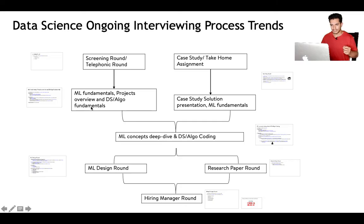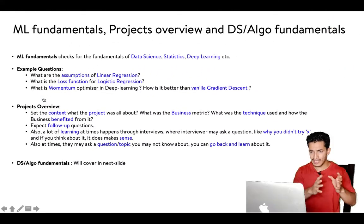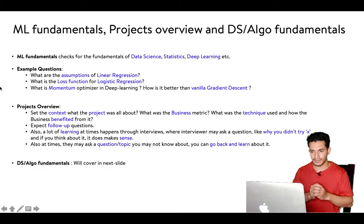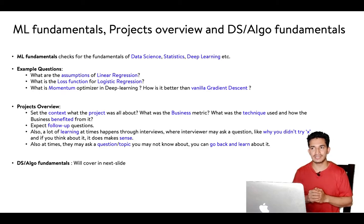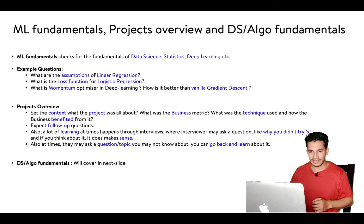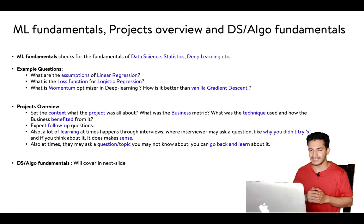In the follow-up round, ML fundamentals, project overview, and DS/Algo fundamentals are tested. For ML fundamentals, topics include data science, statistics, and deep learning. Example questions include: what are the assumptions of linear regression, what is the loss function of logistic regression, what is the non-linear function used in logistic regression, and if a sigmoid function is used does that make logistic regression a linear or non-linear model. There can also be deep learning questions like what is a momentum optimizer and how is it better than vanilla gradient descent.